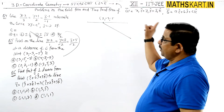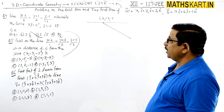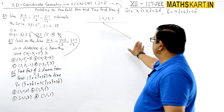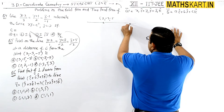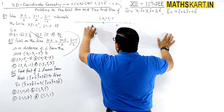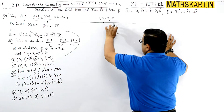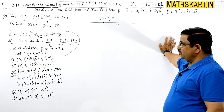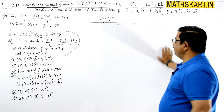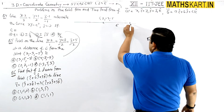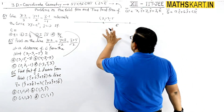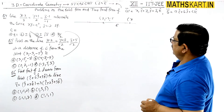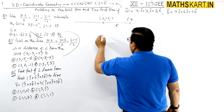So, the point on the line at a distance of 6 from this point — since both are on the same line, there can be a point on either side. It can be here or there. Let's say that point can be (x1, y1, z1). First, we take a general point — any point on the line.